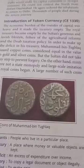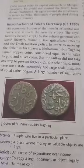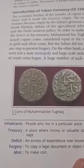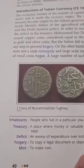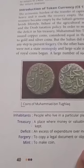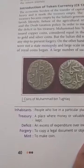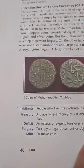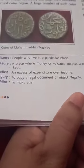Then came the introduction of token currency. The economic burden of the transfer of capital had made the treasury empty. To meet this financial problem, Muhammad bin Tughluq issued copper coins considered equal in value to gold and silver coins. But the Sultan did not take any steps to prevent forgery — that is, the illegal copying of official currency.